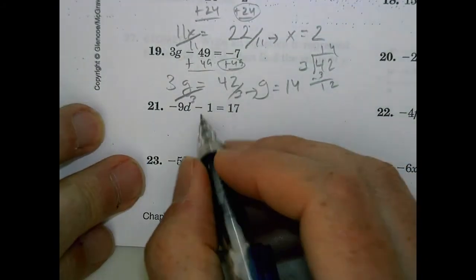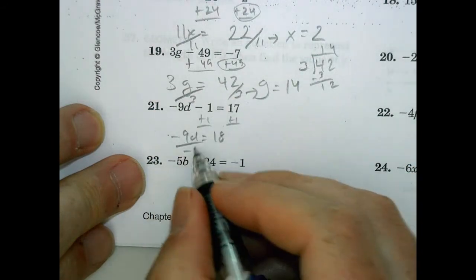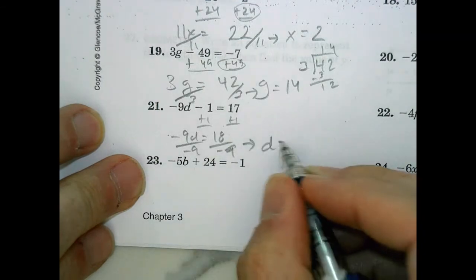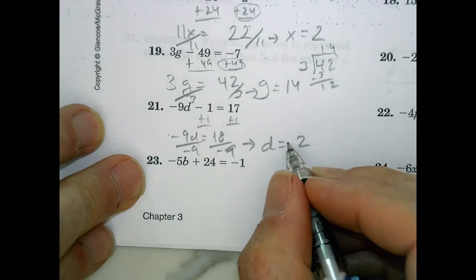Number 21. We're going to add 1, add 1. So I have negative 9d equals 18. Divide by negative 9, divide by negative 9. So d equals 18 divided by 9 is 2. Positive divided by negative is negative.